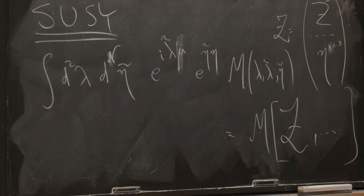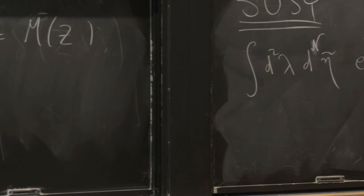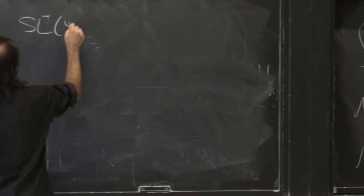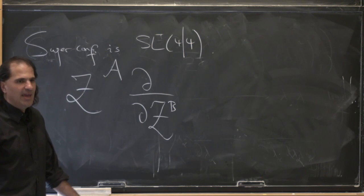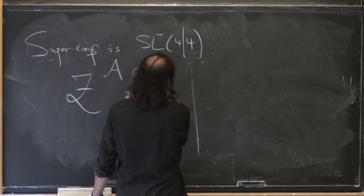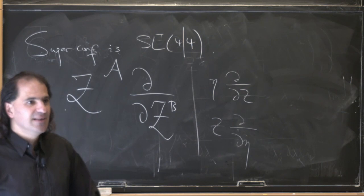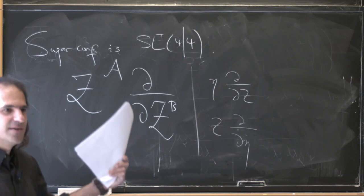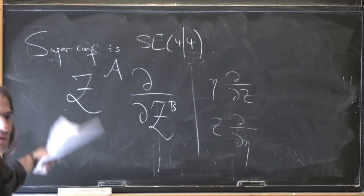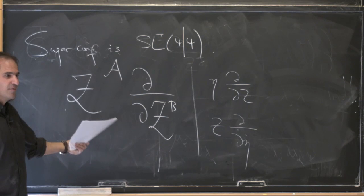And what is the super-conformal group? The super-conformal group is SL(4|4) — that's just a name. That just means the generators are calligraphic-A · d/d(calligraphic-B), where A and B run over both bosonic and fermionic things. So for instance, there are new things here like eta · d/dz, or z · d/deta. You can translate those back to spacetime to get the d/dlambdas and the lambdas and all the different elements of the super-conformal group. But if you've ever suffered through the super-conformal group in ordinary variables with x's, it's very hard to remember everything — it's totally trivial to remember here: just SL(4|4), just linear super-transformations.